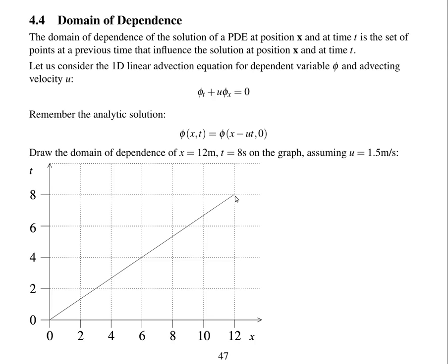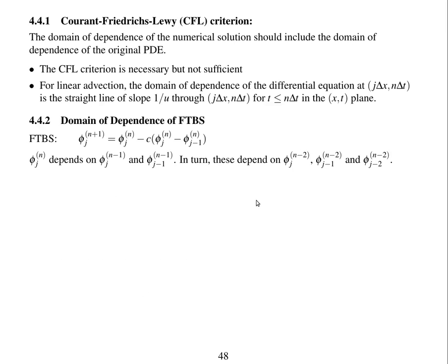Here is the domain of dependence. It's a straight line. The solution at all of these positions affects the solution here. It is a straight line with gradient one over u.